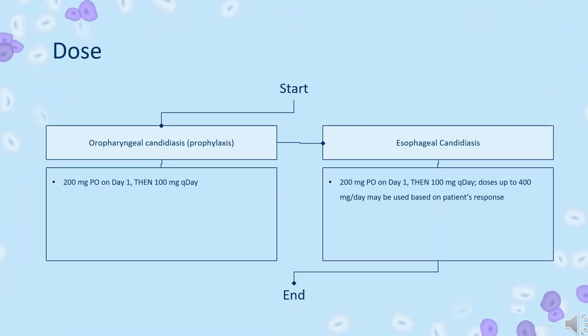Dose. Oropharyngeal candidiasis: 200 mg PO on day 1, then 100 mg once daily. Esophageal candidiasis: 200 mg PO on day 1, then 100 mg once daily. Doses up to 400 mg per day may be used based on patient's response. Cryptococcal meningitis: 400 mg PO on day 1, then 200 mg PO once daily.